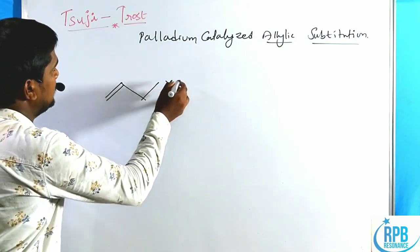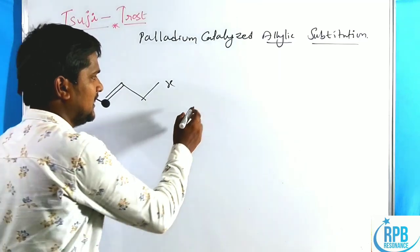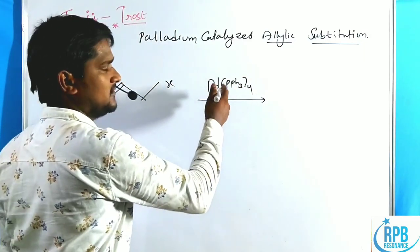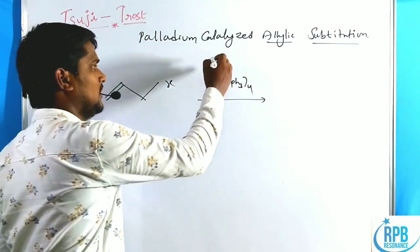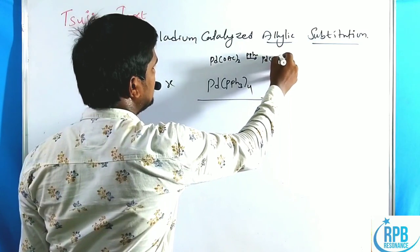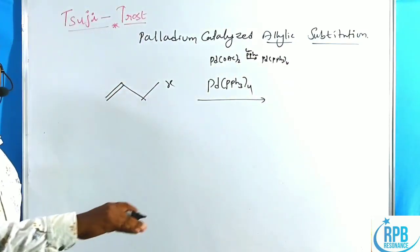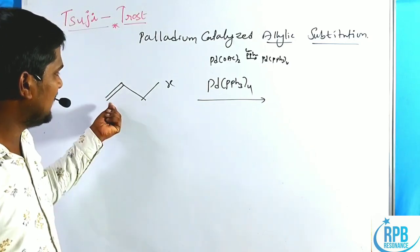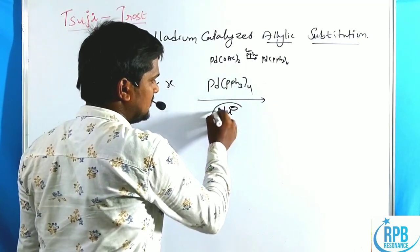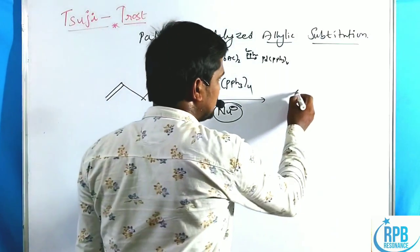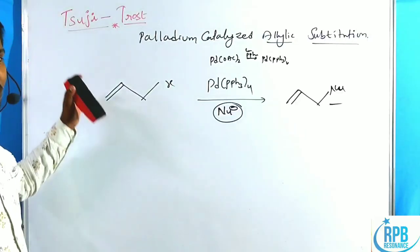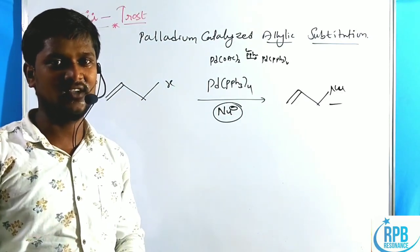This is the simplest representation of the Suji-Trost reaction: an allyl halide in the presence of Pd(PPH3)4 — which is generated from Pd(OAc)2 in the presence of PPH3 — reacts with a nucleophile which substitutes at the allylic position. These types of reactions are called the Suji-Trost reaction.